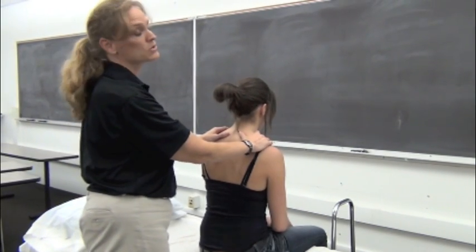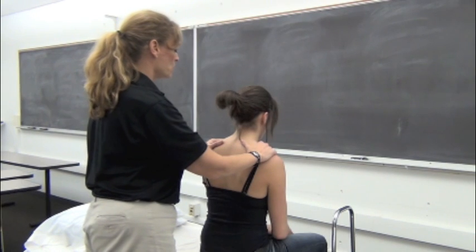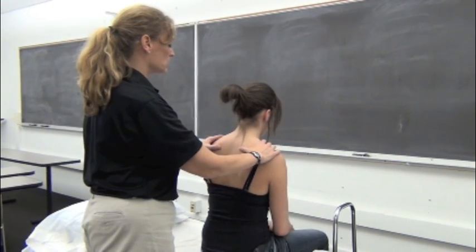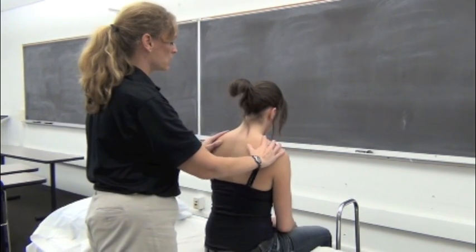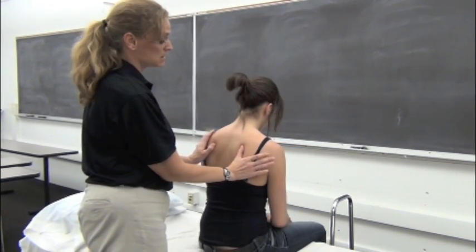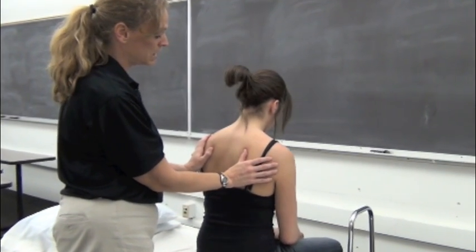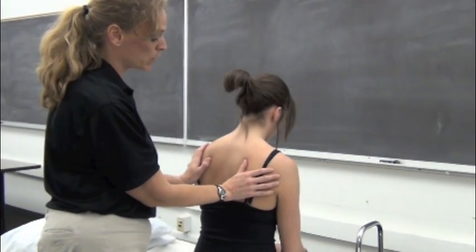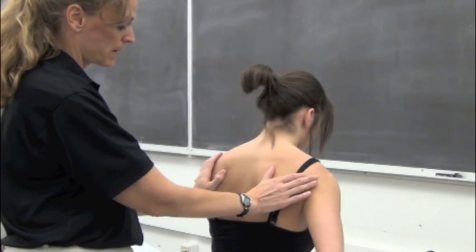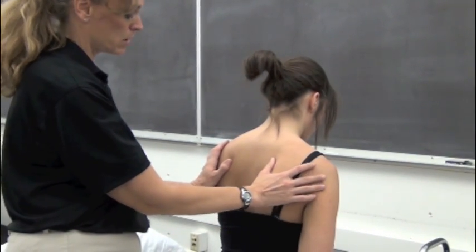We'll also be going through first rib palpation with the patient in supine. Back in this position, your thumbs are going to naturally fall along the medial border of the scapula. In this patient the scapular borders are well defined. However, if you have difficulty finding the scapular border, go ahead and ask the patient to put their hand behind their back, and that will allow you to find the border.